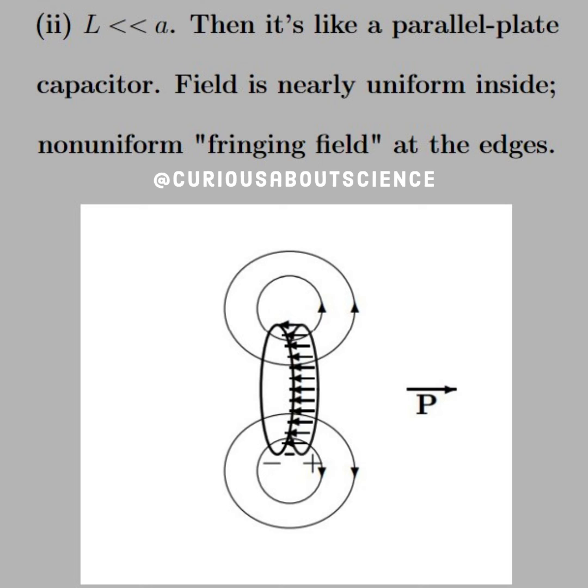But there's a non-uniform fringing field at the edges. We say that it's non-uniform because each of these fields goes in a bigger circle than the last one, and they're all concentric, and they keep circling in on one another at varying magnitudes and distances.